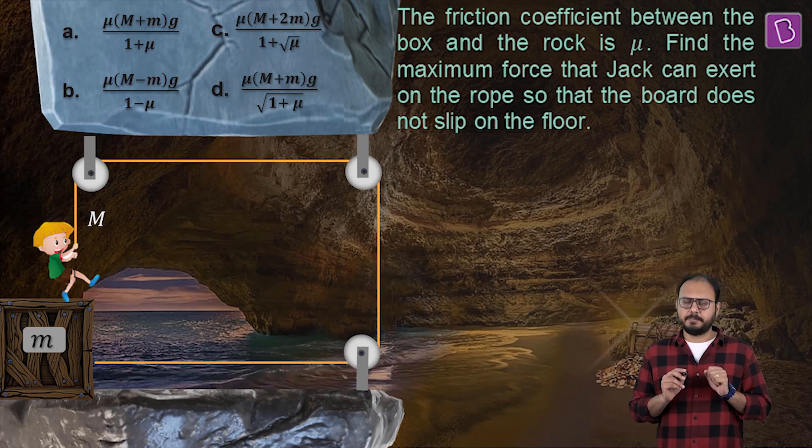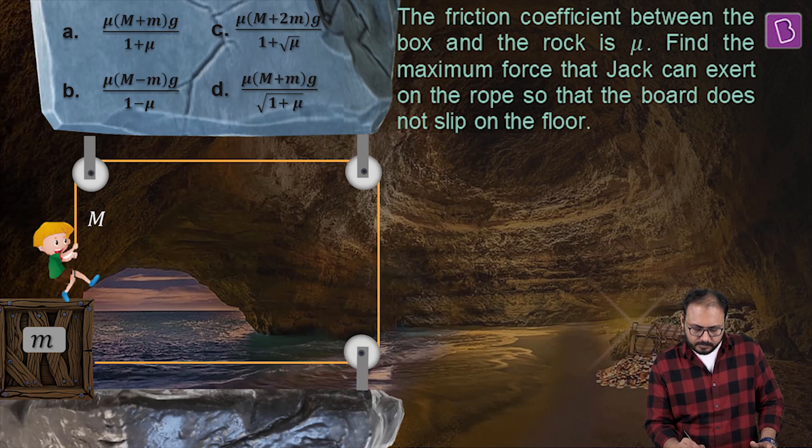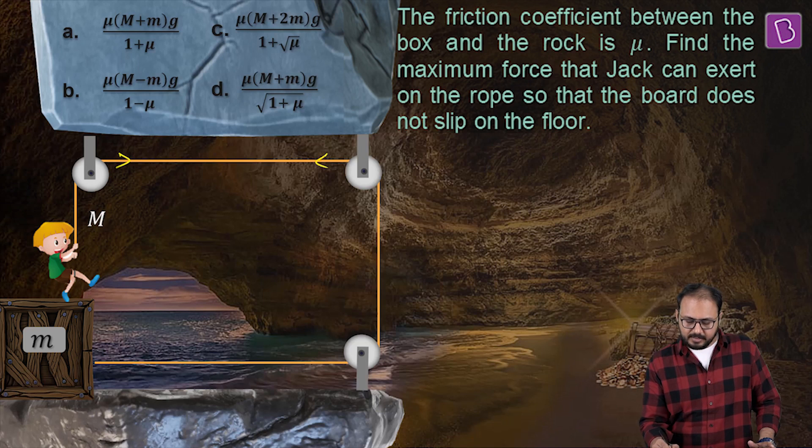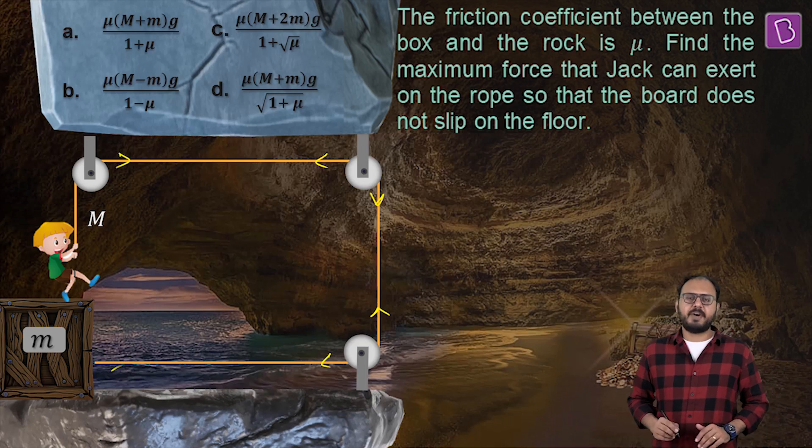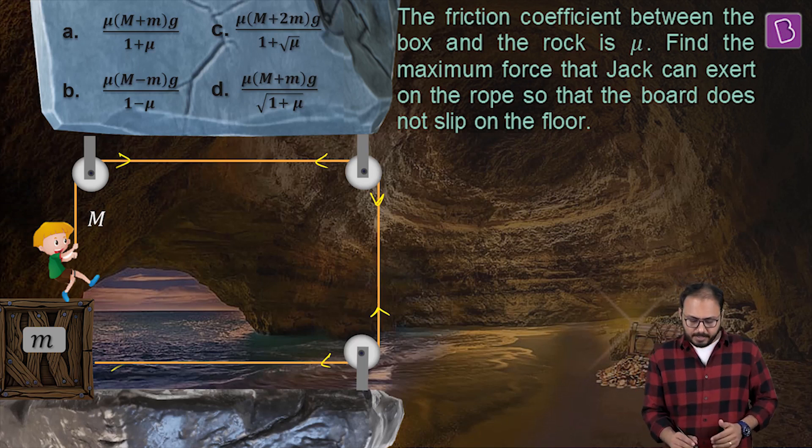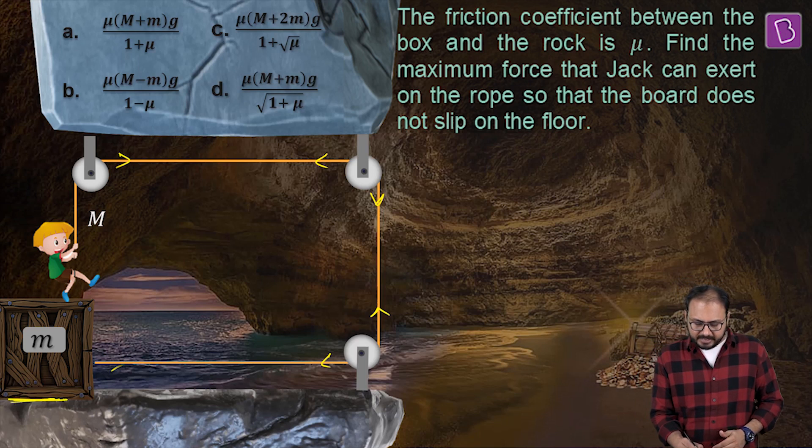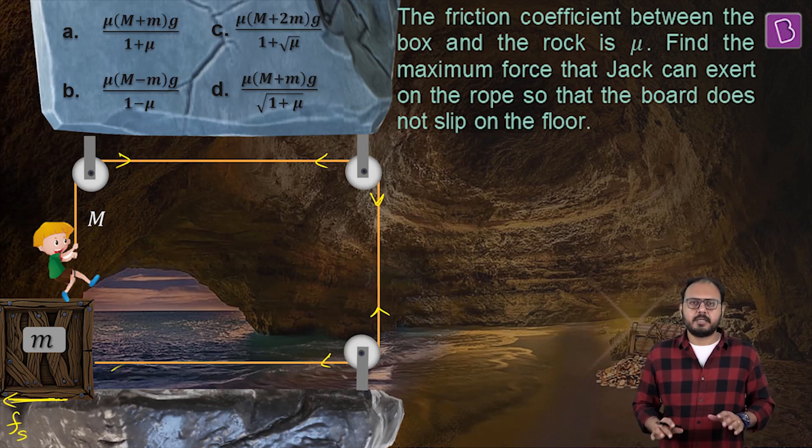Understand the physicality. If Jack pulls the rope down, the rope pulls Jack up. As a result, this tension gets transmitted throughout. And finally, the crate or box gets pulled to the right. But the box does not go to the right right away because the friction acting between the rock and the box stops it from going.